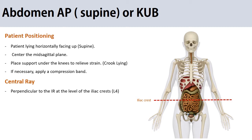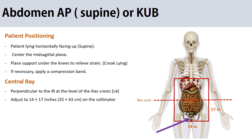In supine projection or KUB x-rays, it is very important to include the symphysis pubis in the image. Always check that, and if the patient is tall such that the pubis is out of the region of interest, adjust centrally to include the symphysis pubis and ensure that the bladder is fully visualized. Collimation should be 14 to 15 inches and the tube distance should be 100 cm.